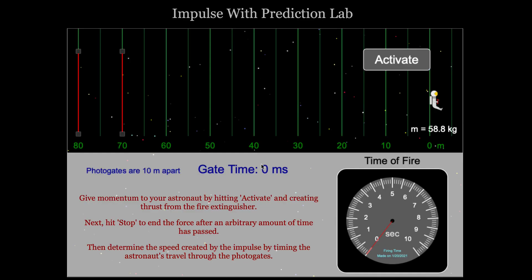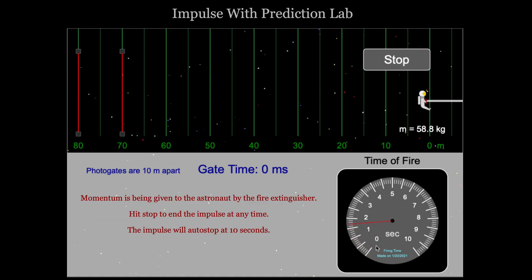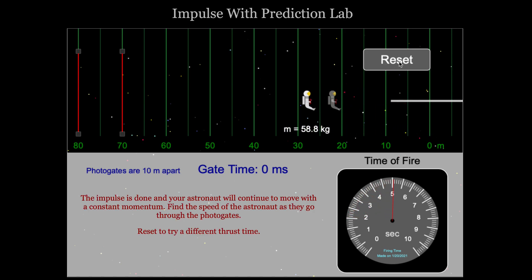When students hit begin, they'll get an astronaut of randomly generated mass and a fire extinguisher with a randomly generated thrust. They won't know the thrust of the fire extinguisher. They can activate the fire extinguisher for any time up to 10 seconds. Here we did about 5.1 seconds.